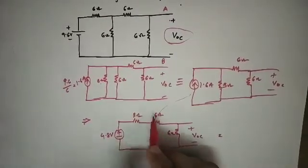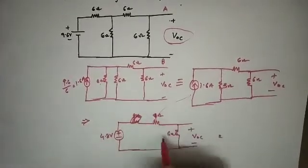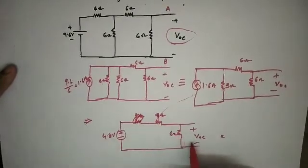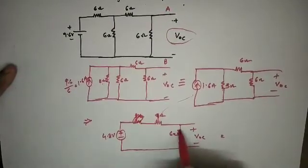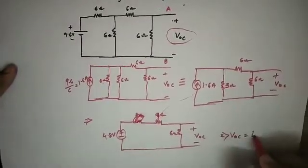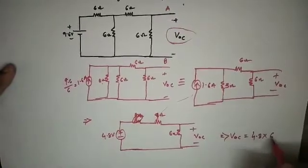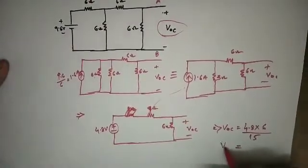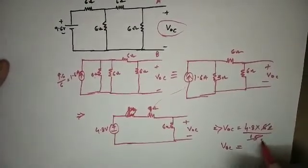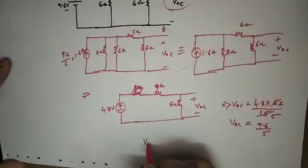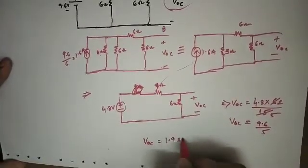Now, combining the 3 and 6 ohm resistors, the series load is the same. Using voltage division, VVC equals total voltage multiplied by the relevant resistance divided by total resistance. So VVC equals 9.6 divided by total resistance, giving VVC equal to 1.92 volts.